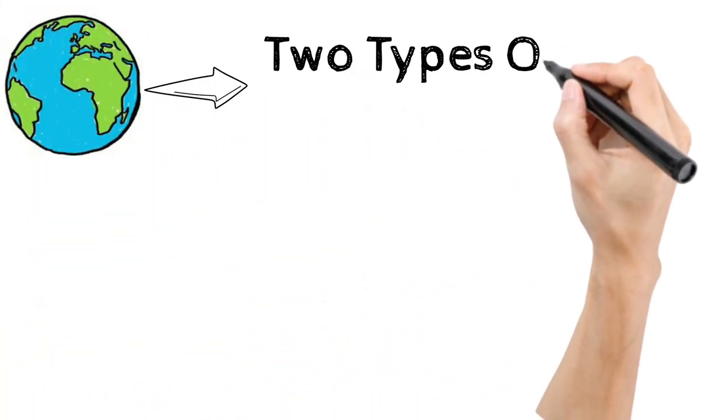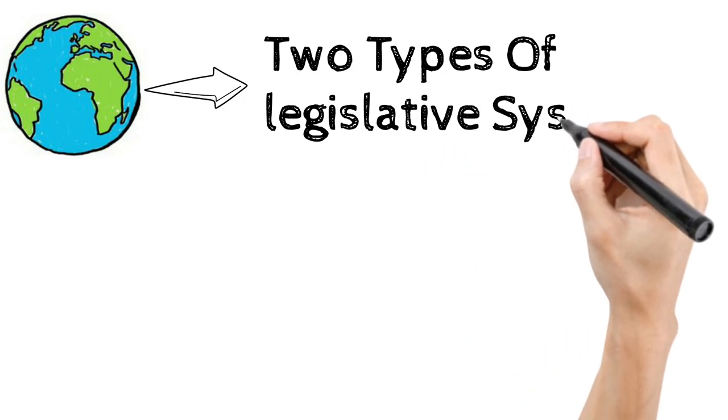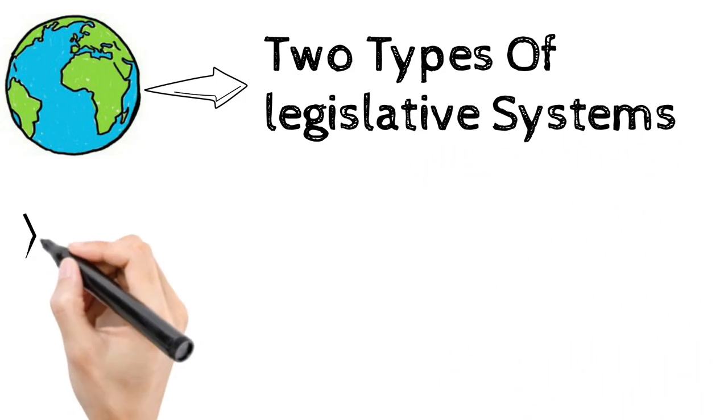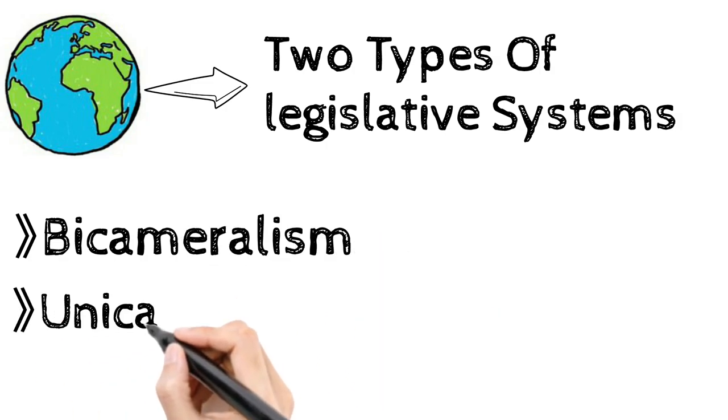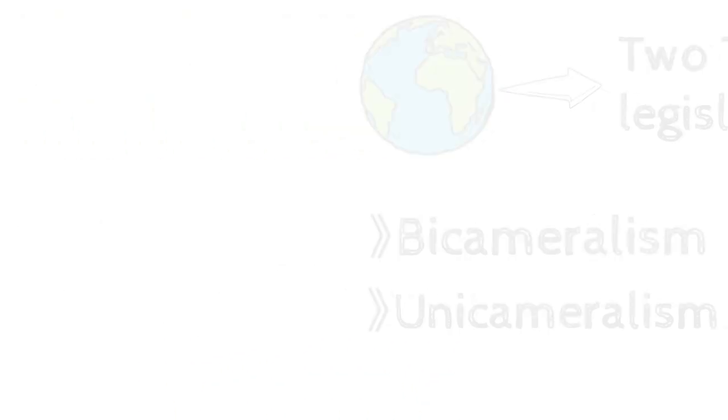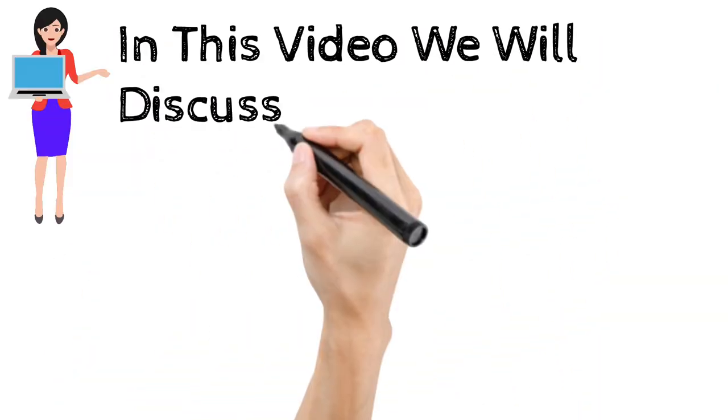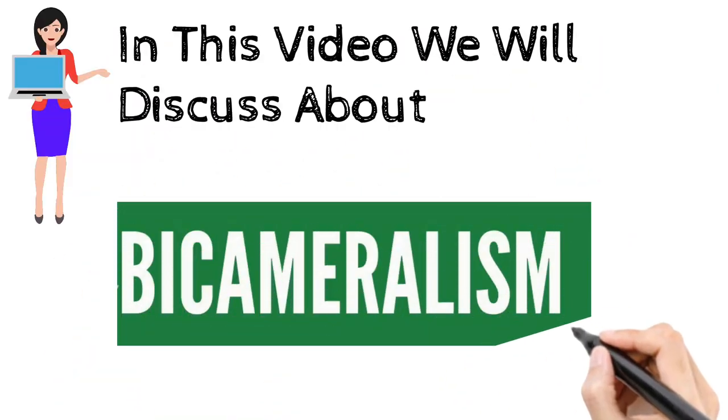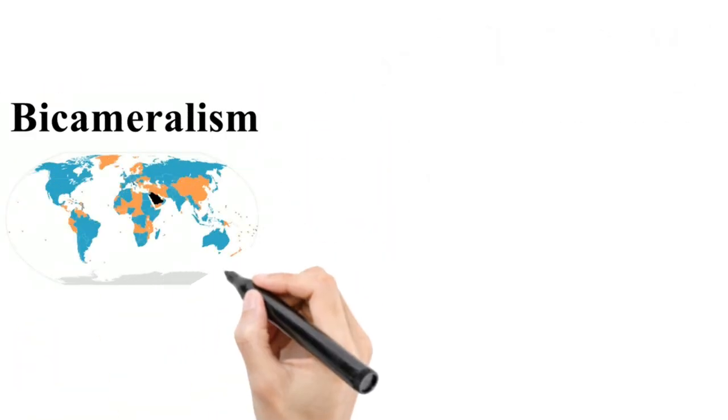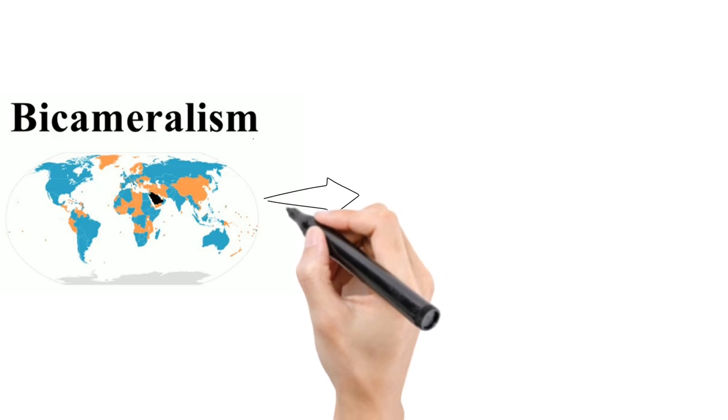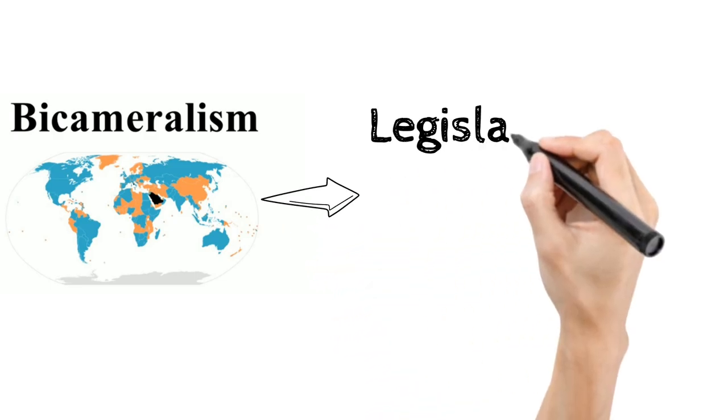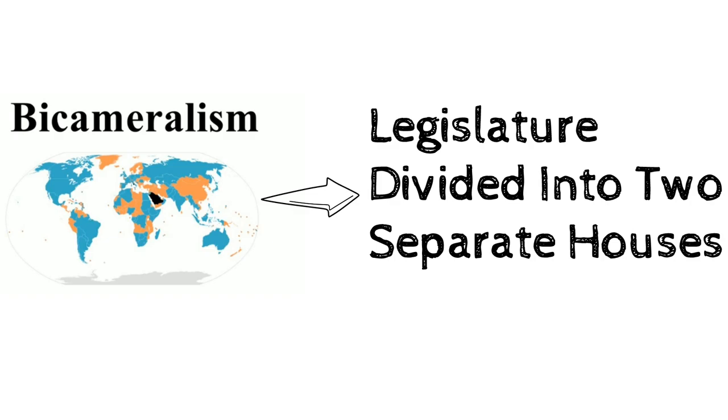So friends, in the world we see two types of legislative systems. One is bicameralism and the other is unicameralism. In this video we will discuss bicameralism. Bicameralism means that the legislature is divided into two houses, which we call the bicameralism system.